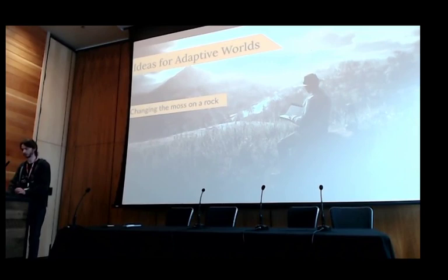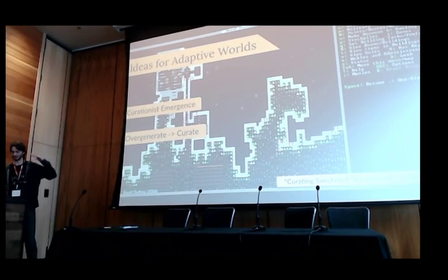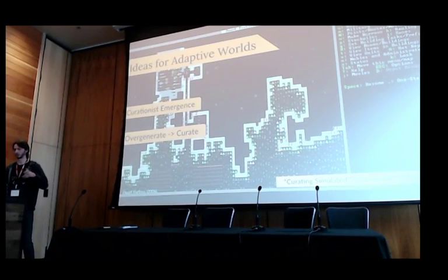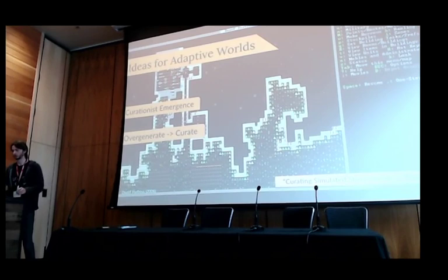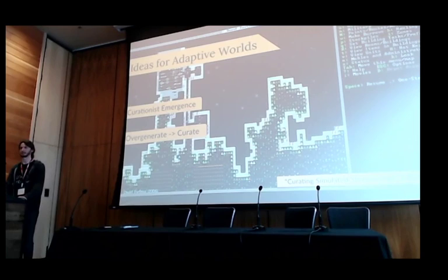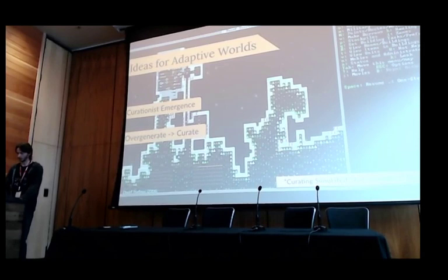We can also do other things than environmental change — we can look at things like procedural animation and different types of changes to the world. There's also the idea of using curation as an emergence: over-generating parts of the world and then curating the parts that we actually think are interesting or relevant to what we're currently doing can help us so we're not just generating blindly.